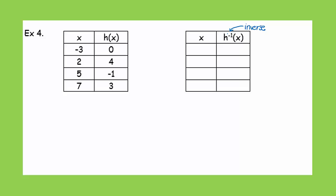All we've got to do is switch columns, and we are done. 0, negative 3. I just switched x and y on that point. Let's keep going. 1, 4, 2, switch x and y. Negative 1, 5, switch x and y. 3, 7, switch x and y. I am done. It is that simple.